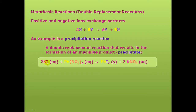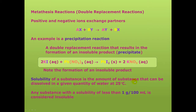Note that the lead replaces the potassium ion and we end up with lead iodide. The solubility of a substance is the amount of substance that can be dissolved in a given quantity of water at 25 degrees Celsius. For example, I can dissolve 36 grams of sodium chloride into 100 milliliters of water at 25 degrees Celsius. If I were to try to dissolve any more than that, it's not going to dissolve. Any substance that has a solubility of less than one gram per 100 milliliters of water is considered insoluble. Notice the formation of our insoluble product, the lead iodide.